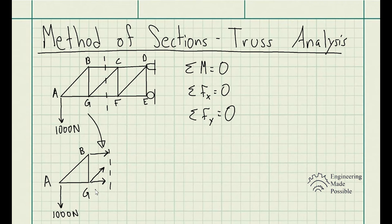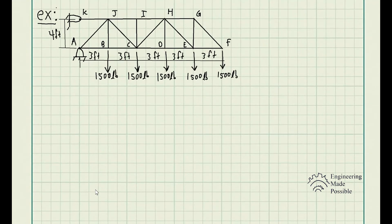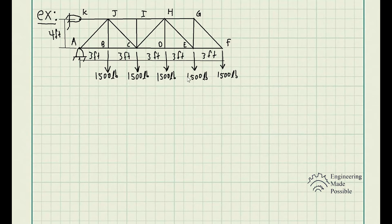Let's do an example of the method of sections. The problem is to determine the force in members CD, HI, and CJ of the truss, and state if each member is in tension or compression. We have this truss with supports at points A and K — both hinges — with a height of 4 feet, a width of 3 feet between joints, and external forces applied at each joint. Members CD, HI, and CJ are identified on the truss.